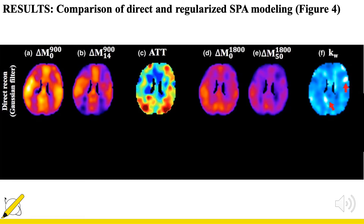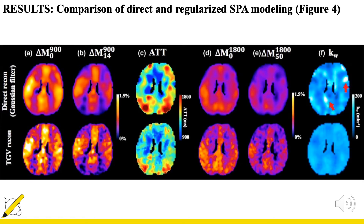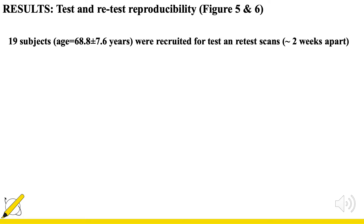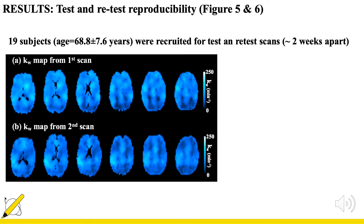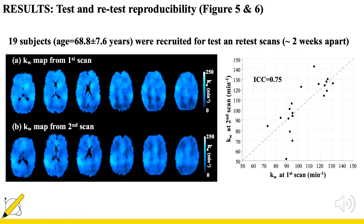The blue map shows Kw estimated by directly applying the SPA model. As indicated by the red arrows, focal regions with high Kw values can be observed. The second row shows the TGV regularized reconstruction, where those suspicious high Kw regions caused by noise were successfully removed. Nineteen subjects with an average age of 69 years were recruited for test-retest scans about 2 to 4 weeks apart. The ICC of Kw equals 0.75, indicating good reproducibility of the proposed technique.